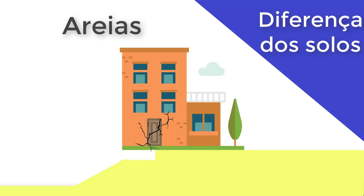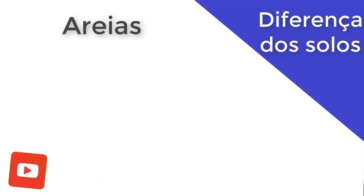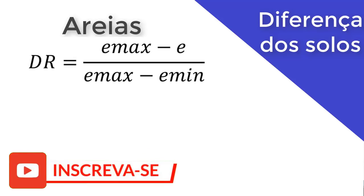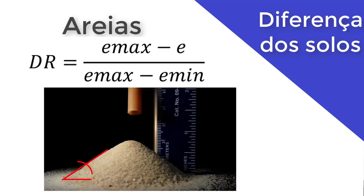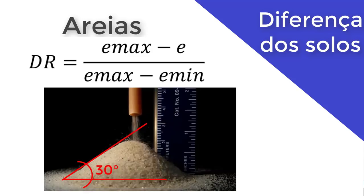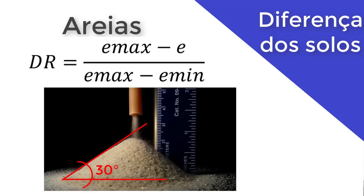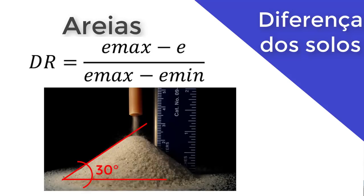Por que falo da questão da compacidade? Porque nós temos que fazer a chamada compacidade relativa. O que é isso? É a relação entre os índices de vazios máximos, qual o máximo de vazio que posso ter nesse solo, com o índice de vazio real e o índice de vazios mínimo. A compacidade relativa tem que ser calculada para que a gente possa entender melhor o comportamento do solo. A areia pode ser muito compacta a ponto de se estabilizar por ângulo de atrito entre as partículas, mas em geral é um tipo de solo muito complicado de se trabalhar, apesar de ter alta capacidade de resistir a esforços.